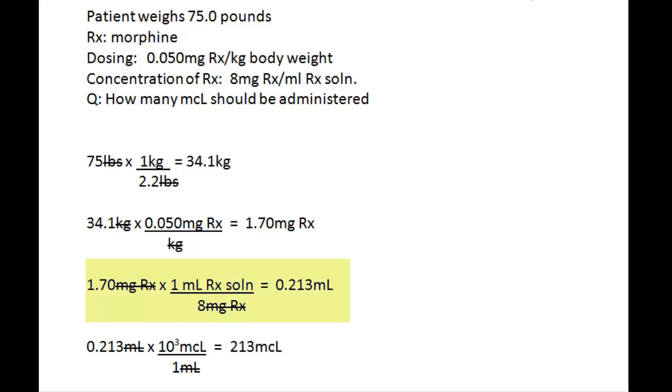Then we need to determine the volume of solution this drug is contained in, and we use the 8 milligrams of drug per milliliter of solution to do that. And again, we need to reciprocate that to get 0.213 milliliters of drug. Converting 0.213 milliliters to microliters, we get 213 microliters.